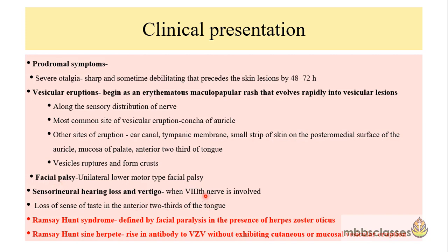When the eighth cranial nerve is involved — as in stage 3 and stage 4 of Hunt's classification — the patient will also develop sensorineural hearing loss along with giddiness. Moreover, there will also be loss of taste sensation in the area of distribution of the facial nerve, that is, the anterior two-thirds of the tongue.